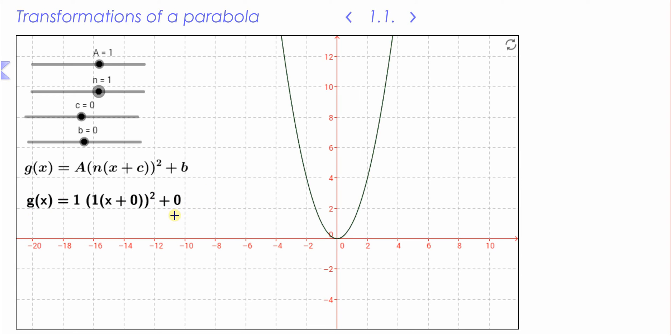We are changing the parameters when it's written in a certain form for a very particular reason, and that is because we can see the transformations much more easily.